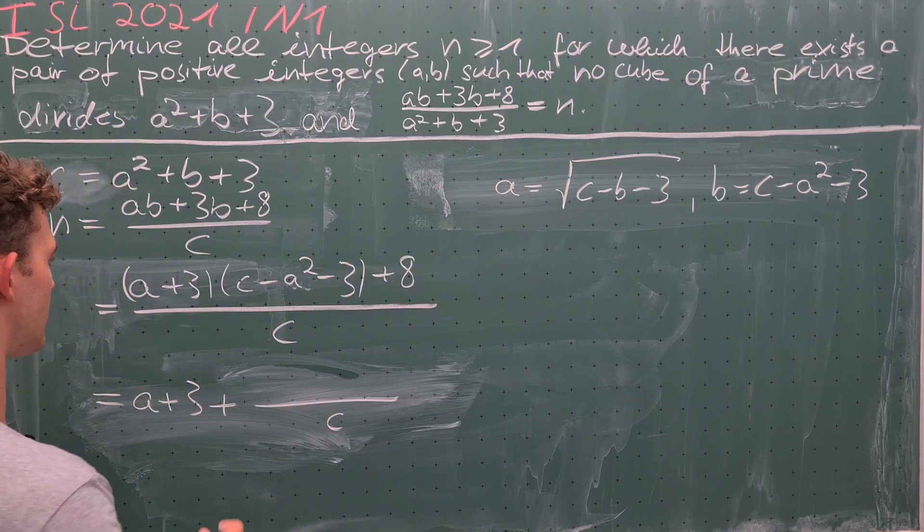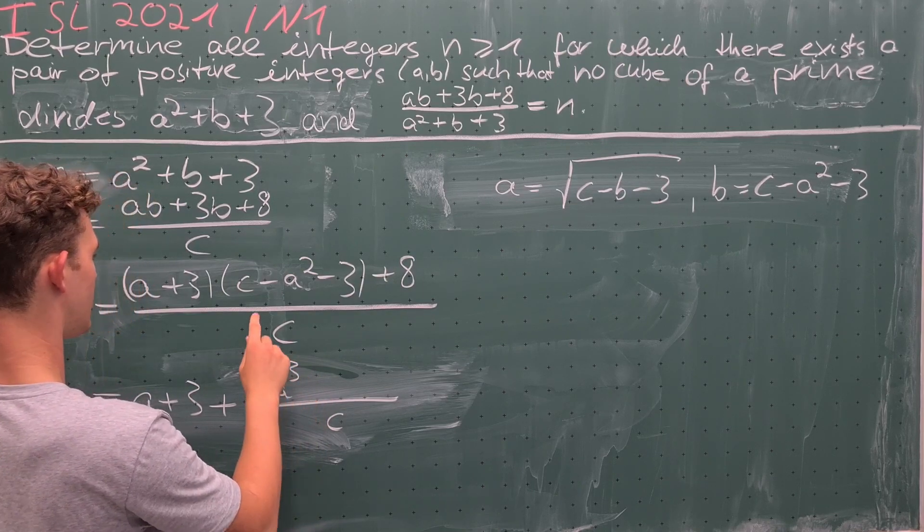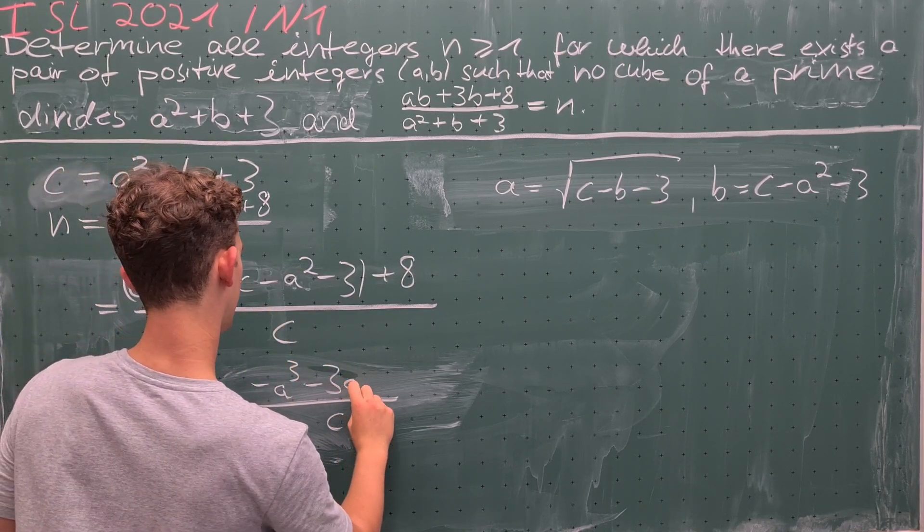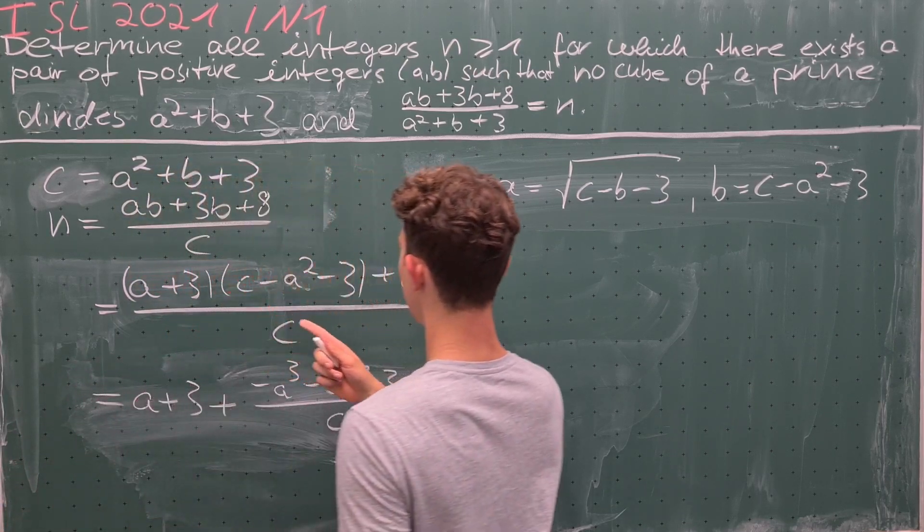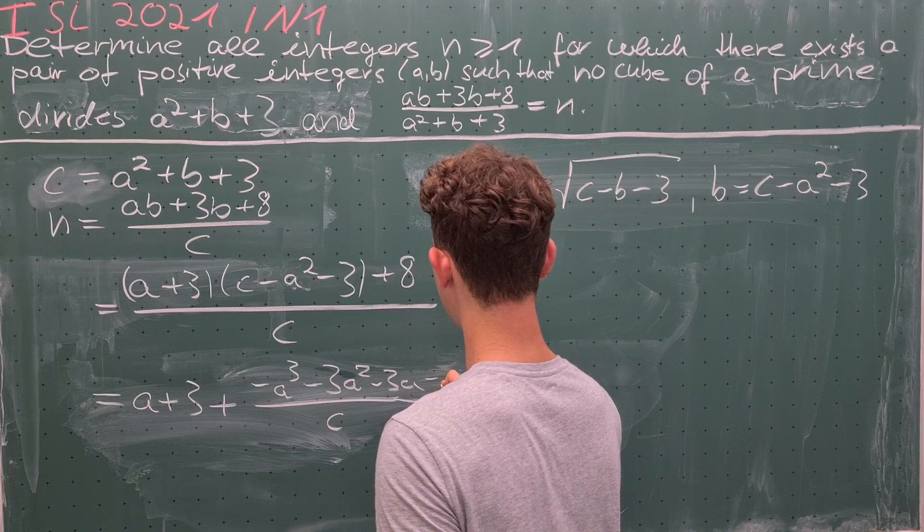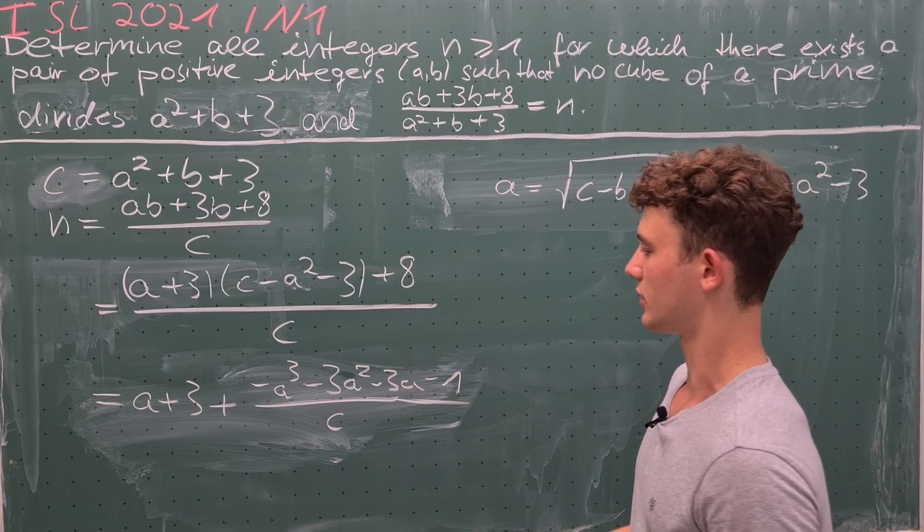and what is left is some polynomial in a divided by c. We collect the terms in order of their power, so we have -a³ - 3a² - 3a - 9 + 8, which equals -1. And this is nothing but -(a+1)³.